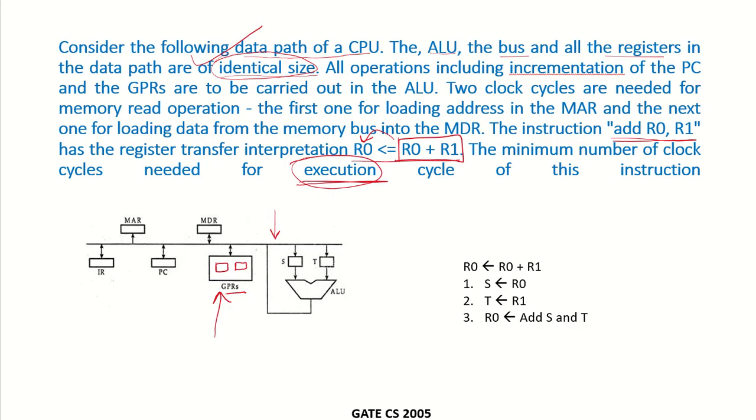First of all, from one of the registers, either R0 or R1, we will have to bring data into the input registers of the ALU. In the first clock cycle we can bring data from R0 into S, and it will come via this bus into S.